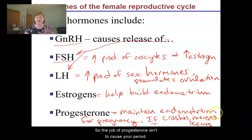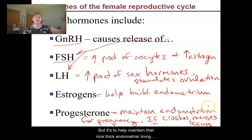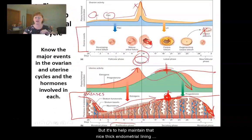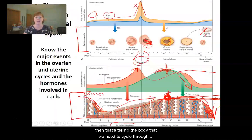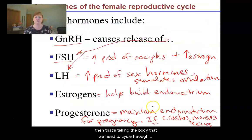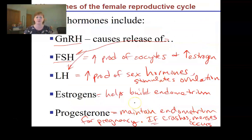The job of progesterone isn't to cause your period, but to help maintain that thick endometrial lining. If we lose progesterone — if it drops — that's telling the body that we need to cycle through again and start over.